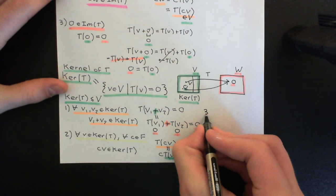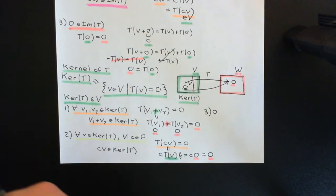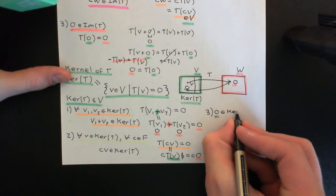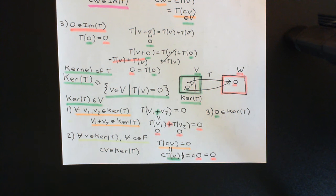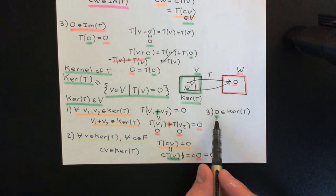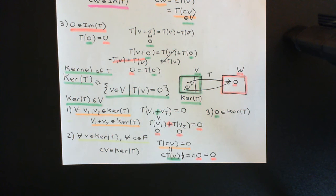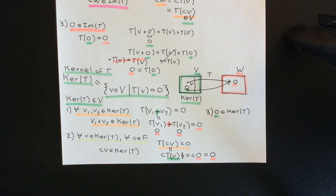Finally, criterion number three: the zero vector in the domain vector space must be an element of the kernel. We've already effectively stated this, because criterion three just means the subset must contain the zero vector from the larger vector space. We know this is true because the zero vector in the domain vector space is always mapped onto the zero vector in the codomain vector space, and hence the zero vector is always an element of the kernel. So indeed, the kernel of a linear transformation is a subspace of the domain vector space capital V.